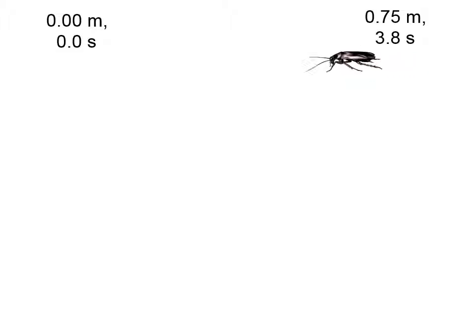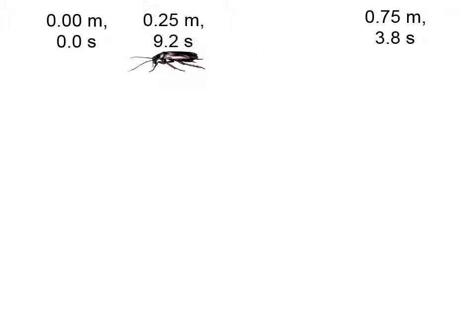That's a rather fast-moving cockroach. Then, at a time of 9.2 seconds, he has changed direction, and he's back to an x-coordinate of 0.25 meters.